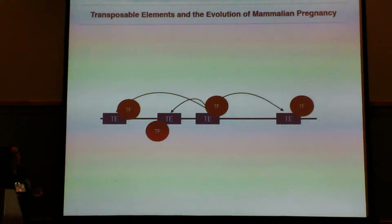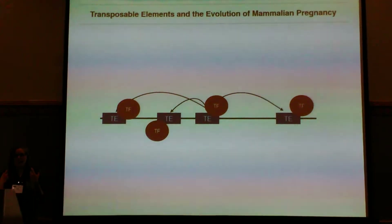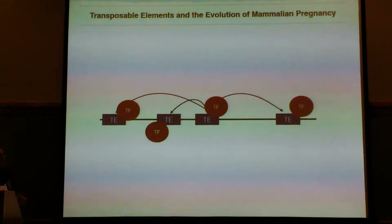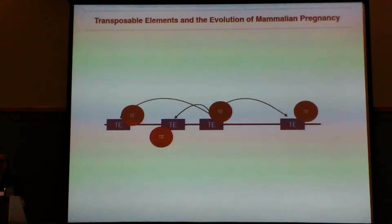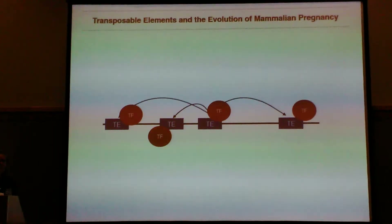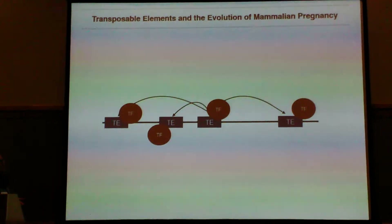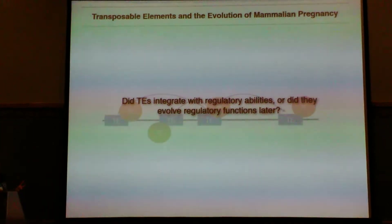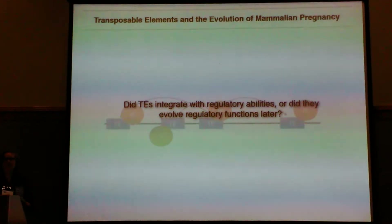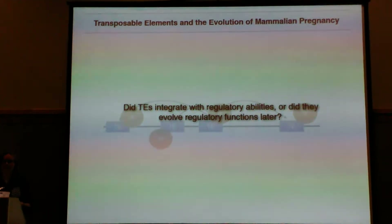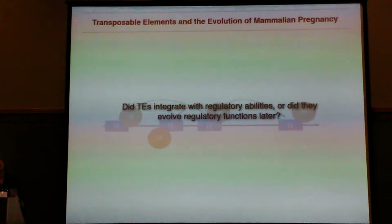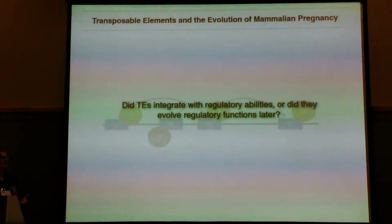Up until this point I've talked a lot about extant transposable elements in extant regulatory regions, and other labs have shown that transposable elements can function as enhancer elements. The key question I'm addressing in this talk is: did these TEs integrate with regulatory ability, or did they evolve regulatory function later on? Is the ability to function as a regulatory element something that came in when the first element integrated, or did it evolve through subsequent mutation?